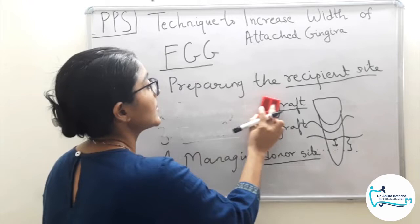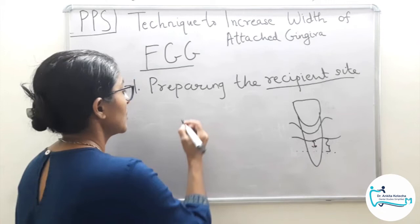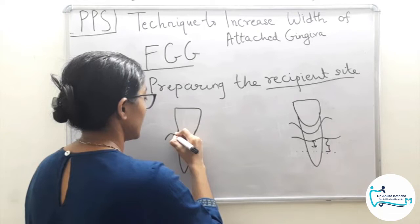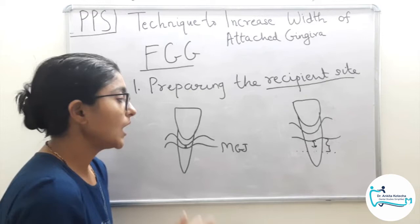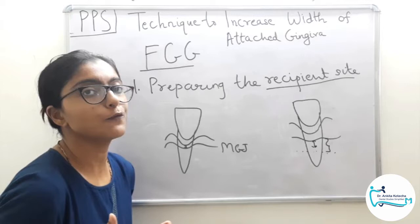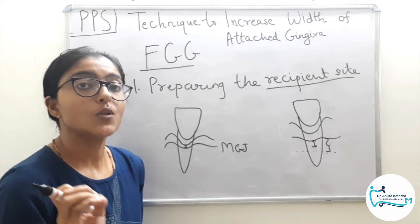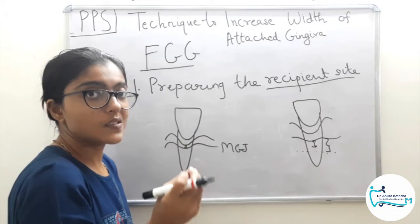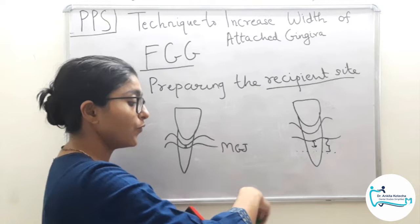In preparing the recipient site, there are various methods in terms of incision depth and number of incisions. In terms of incision depth we have partial thickness versus full thickness. In terms of number of incisions, we have a single horizontal incision versus a horizontal incision with two vertical incisions, one on each side.